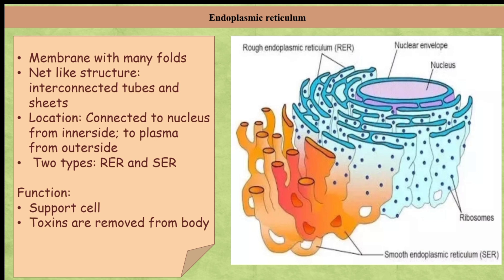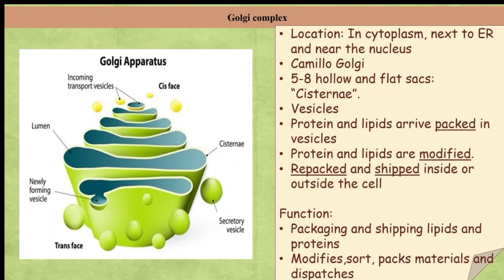The third organelle is the Golgi complex, located in the cytoplasm next to the endoplasmic reticulum and near the cell nucleus. Camillo Golgi was a scientist who discovered it in 1898 using silver staining in the nerve cells of an owl. Golgi complex is made up of 5 to 8 hollow and flat sacs placed parallel to each other called cisternae, which are filled with different enzymes. Small and large vesicles are also present. Golgi complex is mainly known for transporting, modifying, and packaging proteins and lipids in vesicles for delivery to targeted destinations.